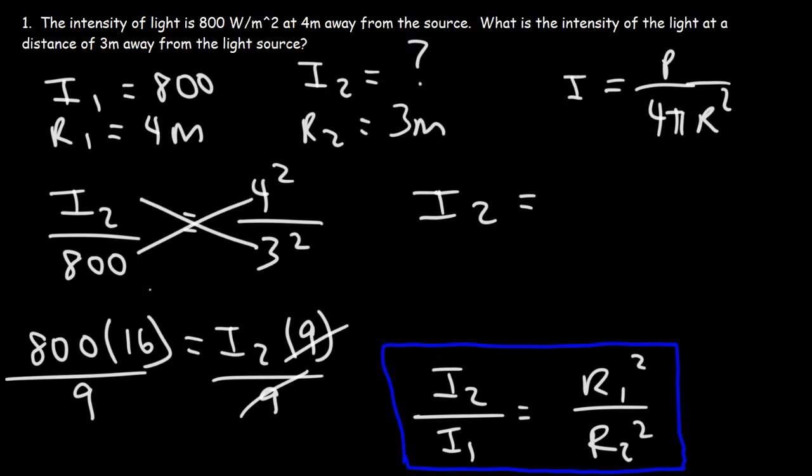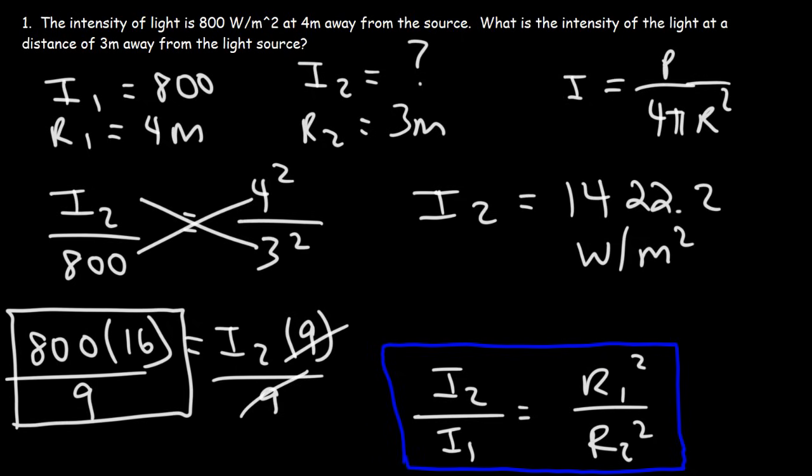So I₂ is going to be 800 times 16 divided by 9. And so as a decimal, that's 1422.2 watts per square meter. So that is the intensity of the light 3 meters away from the source.